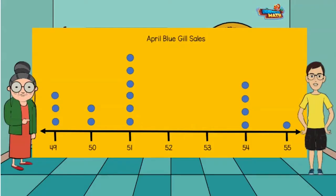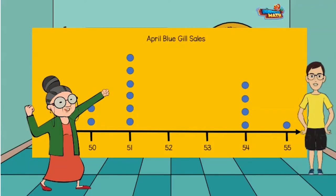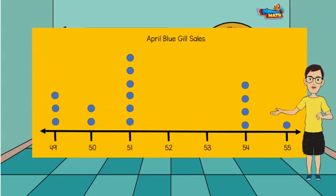Now you ask the question: how many total bluegills were sold? That takes a little more math. Well, quit your lollygagging and get boogieing down with that math. As you mentioned, there were three different times in April 49 fish were bought. To find out how many fish are represented, I would multiply 49 times 3. The answer is 147. I will continue to do this for the rest of the information on the chart.